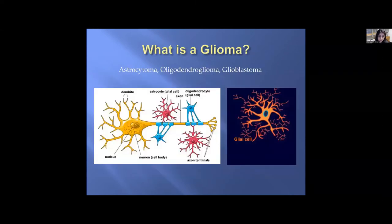What is a glioma? Gliomas consist of astrocytoma, oligodendroglioma, and glioblastoma. We can see images of dendrites, a cell nucleus, astrocytes or glial cells, and oligodendrocytes — another type of glial cell. This shows a neuron with astrocytes and oligodendrocytes attaching to it.